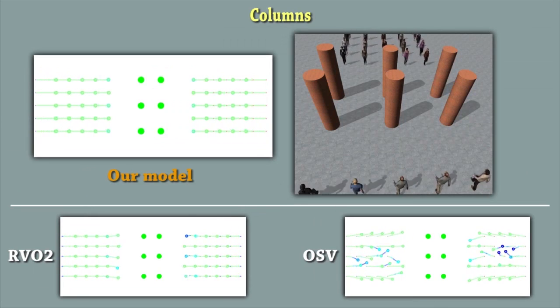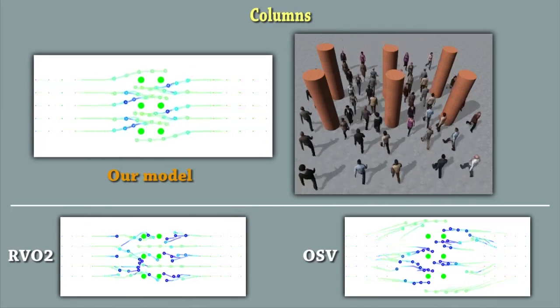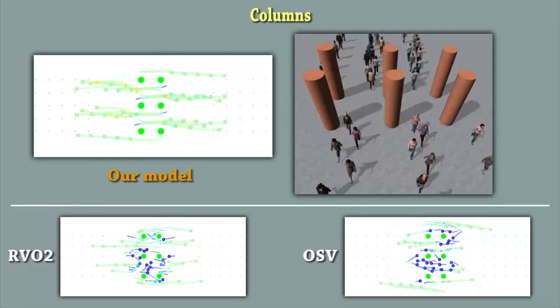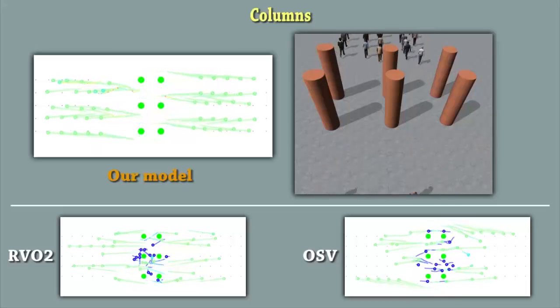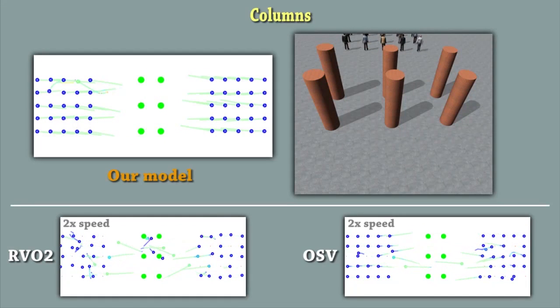Now we increase the complexity of the previous scenario by adding some obstacles. We can observe that in our model, some agents become blue, meaning that they slow down so as to group with each other, forming traffic lanes. This allows them not to get stuck behind the columns or being carried away by the counter-flow.